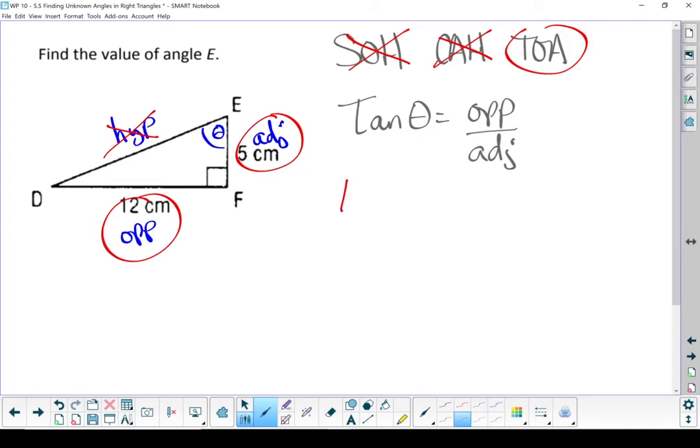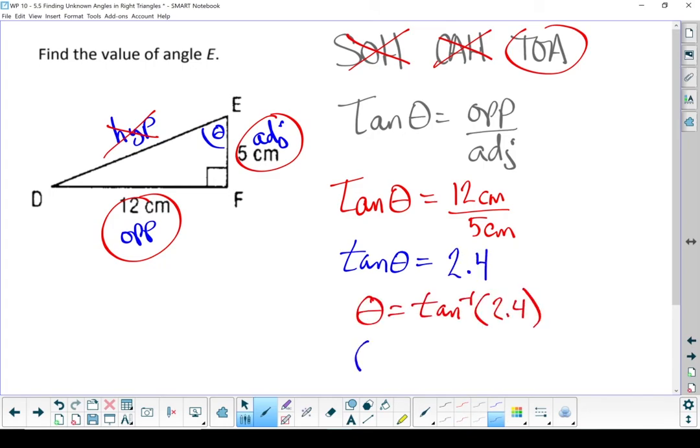Let's put our numbers in the proper places. Once again, I'm careful to make sure that I put my opposite on top, and my adjacent side on the bottom. 12 divided by 5 gives me 2.4. Inverse tan of that. After punching it into my calculator, my second function tan gives me 67.4 degrees.